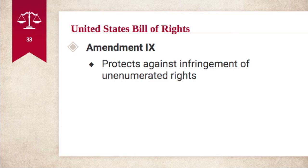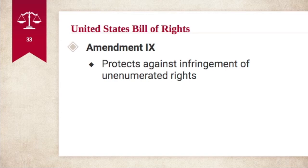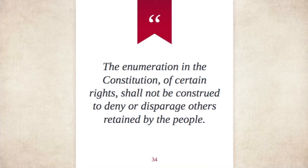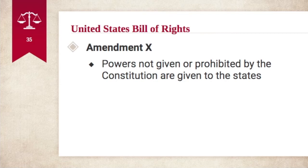The Ninth Amendment protects against infringement of unenumerated rights. These are rights that are implied by other rights but not stated directly in the Constitution. Basically, rights that are implied by the Constitution but aren't stated directly are going to be protected. One example could be the right to vote — there is an amendment that directly protects the right to vote, but it's also implied from the other rights that in the United States we have the freedom and right to vote. The text reads: "The enumeration in the Constitution of certain rights shall not be construed to deny or disparage others retained by the people."